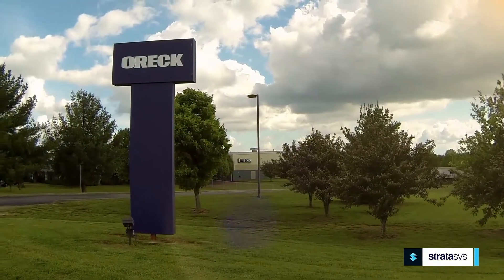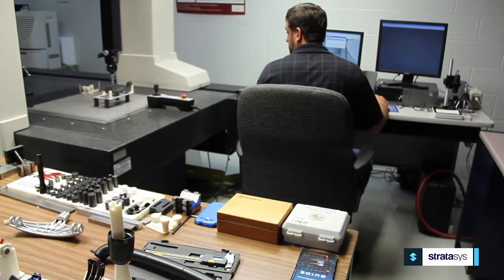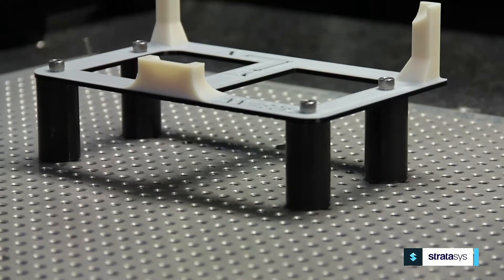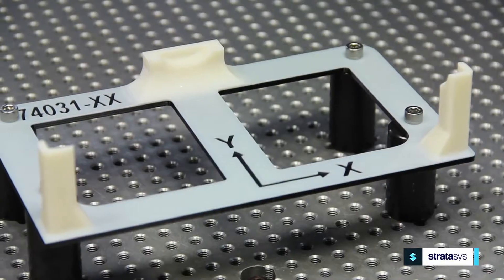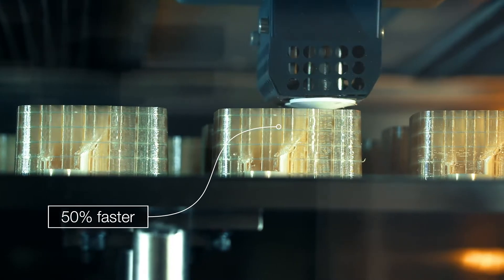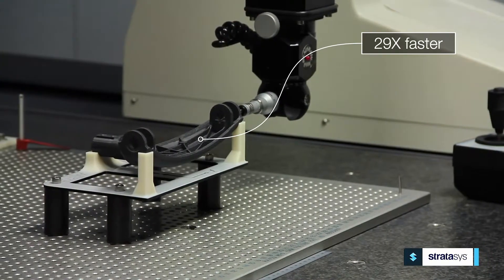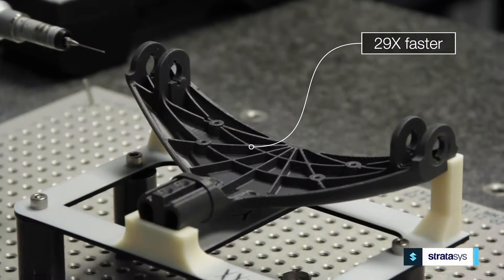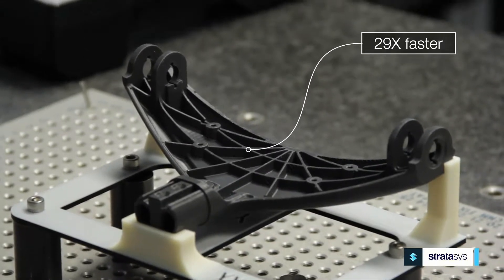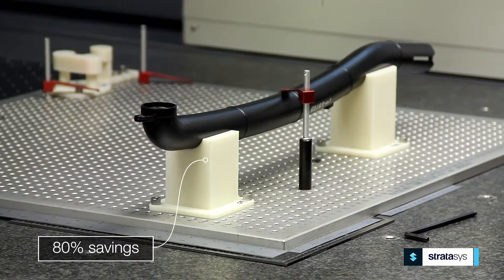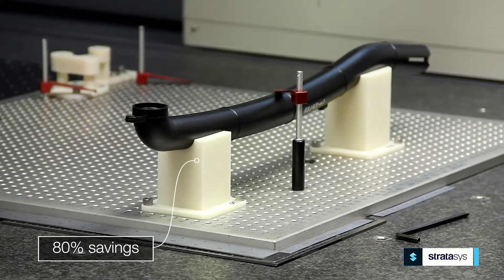OREC is one of the examples of our customers that's using 3D printing for inspection fixturing. Traditionally, they were using urethane casting for their production of inspection fixturing, but once they started using 3D printing, they started making some serious resource gains, including 50% of the production time of the actual fixture, 29 times faster inspection speed actually performing the inspections, and up to 80% cost savings overall once they actually had produced the fixtures.